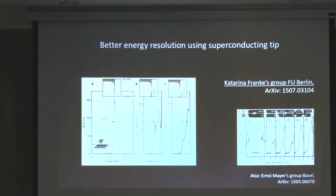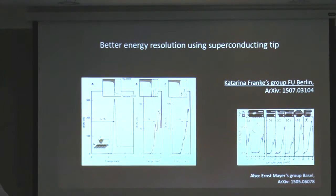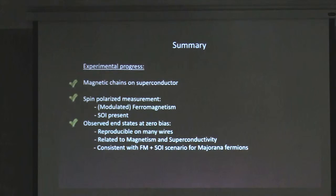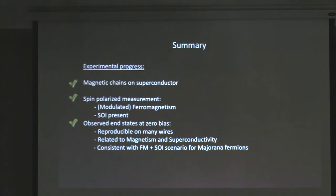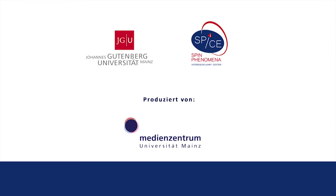Very recently, two other groups have reproduced the growth of these chains and are performing their own comparative measurements, potentially revealing something new. In summary, I conveyed this relatively new way to create Majorana fermions — at least in theory — and showed observations of zero-bias peaks occurring at the ends of atomic chains, which are consistent with the Majorana scenario involving the interplay of ferromagnetism and spin-orbit coupling. Thank you, I look forward to questions.